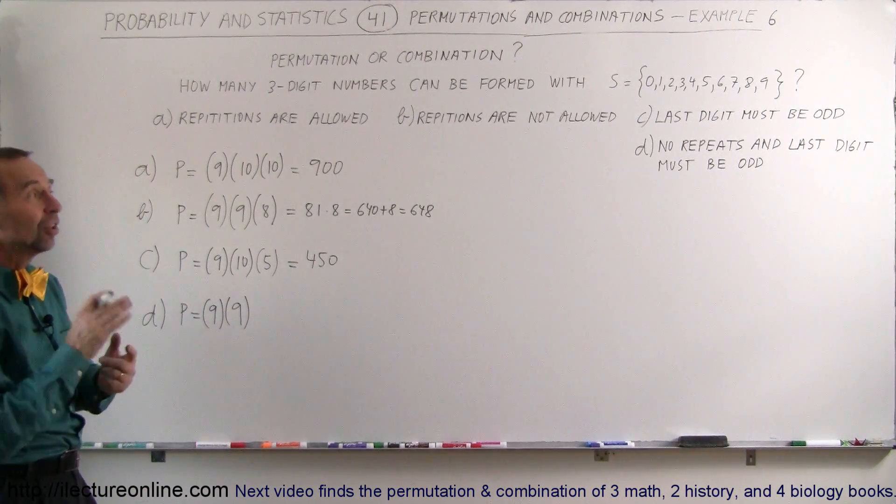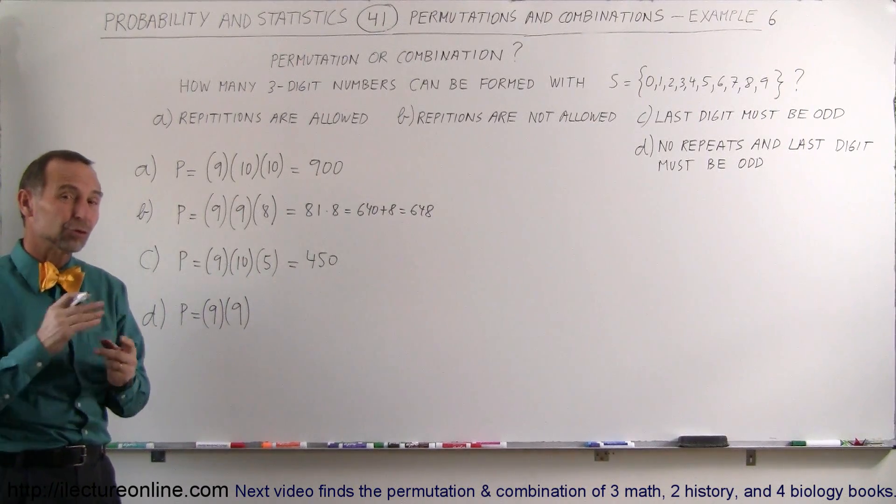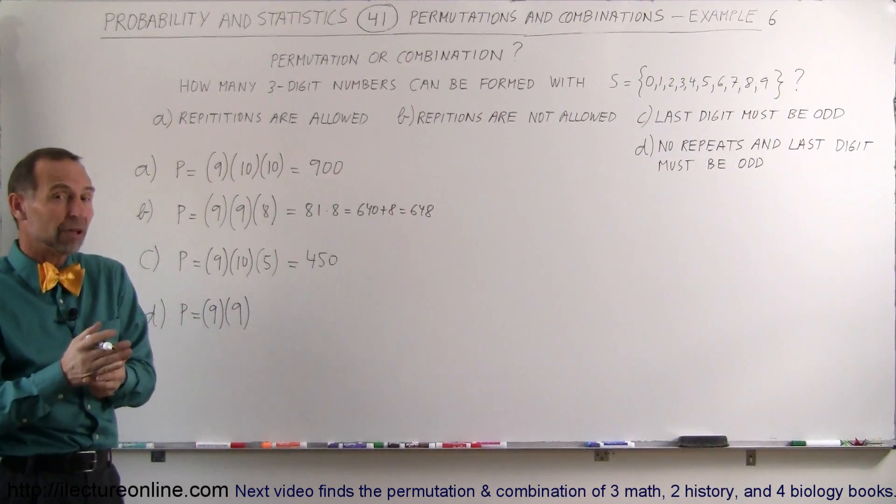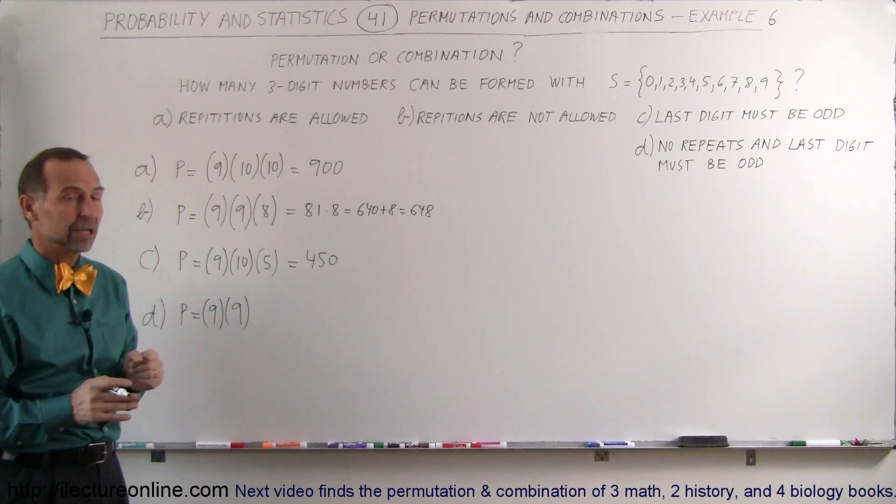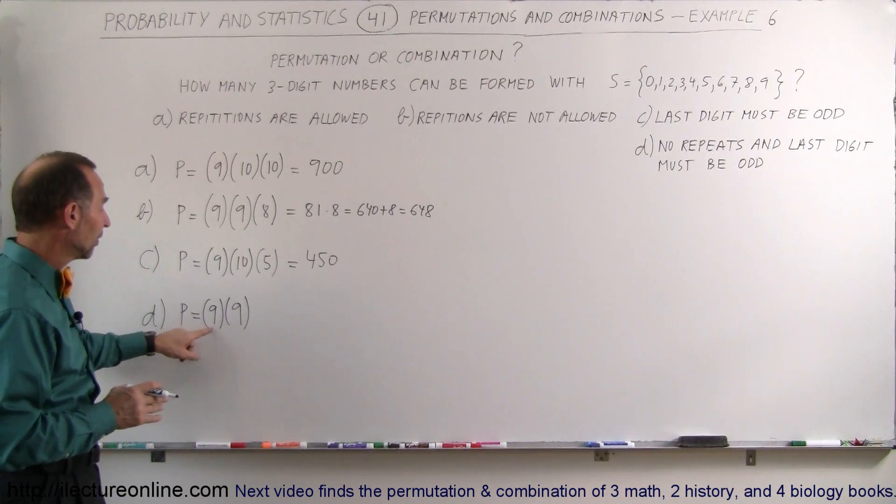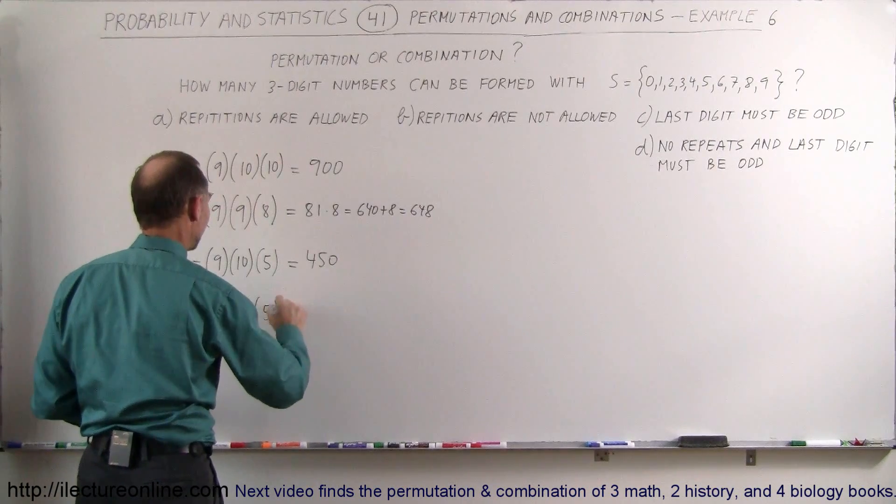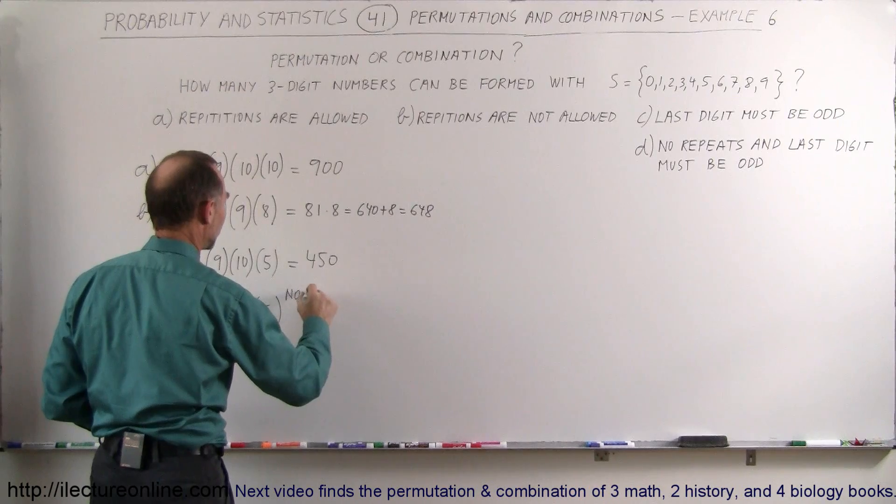Now in the last one, it must be odd, but in addition to that, you already have taken anywhere from 0 to 2 odds, so you only have either 5 possibilities, 4 possibilities, or 3 possibilities, depending upon how many you picked here. So if you already picked, if you picked no odds, then you can have 5 more possibilities at the end, so that's when you have the case with no odds were picked before.